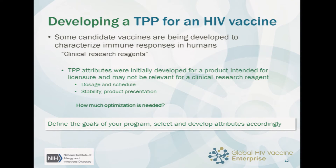Another aspect of HIV vaccines that is somewhat unique is that some of the candidates we're working on aren't necessarily intended to go all the way to licensure. These are molecules or candidates being developed to answer specific immunological questions in humans, given the absence of a preclinical model. These products are likely to be used in phase one studies or early clinical studies, possibly in a couple of studies if you're doing mix-and-match regimens with other candidates, but they are not necessarily going to go all the way through to licensure.